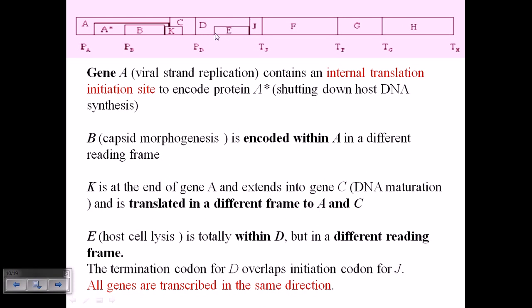Even if we translate gene D and produce, we translate the mRNA of gene D and we produce proteins, it won't produce protein E. It will only produce protein D in that case.